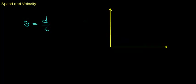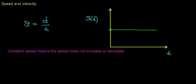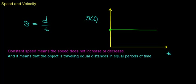In the remainder of this video I want to talk about a special type of motion referred to as constant speed, and then later I'll talk about constant velocity. A speed versus time graph for something traveling at constant speed looks like a flat horizontal line — the speed doesn't increase or decrease over the interval. Constant speed means the object travels equal distances in equal periods of time.